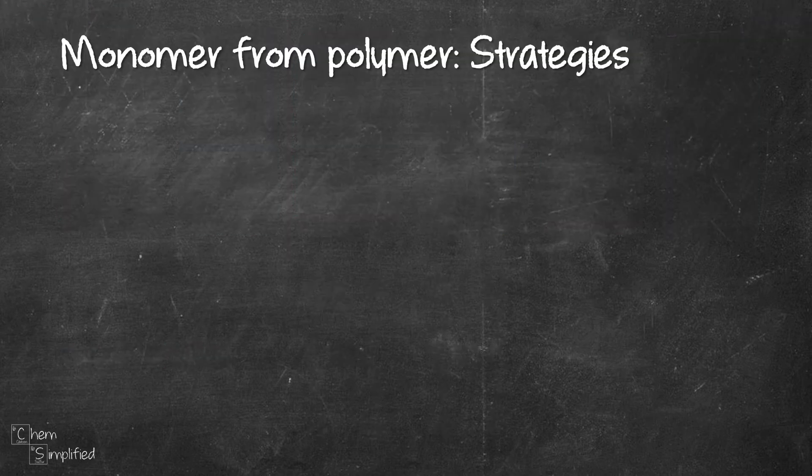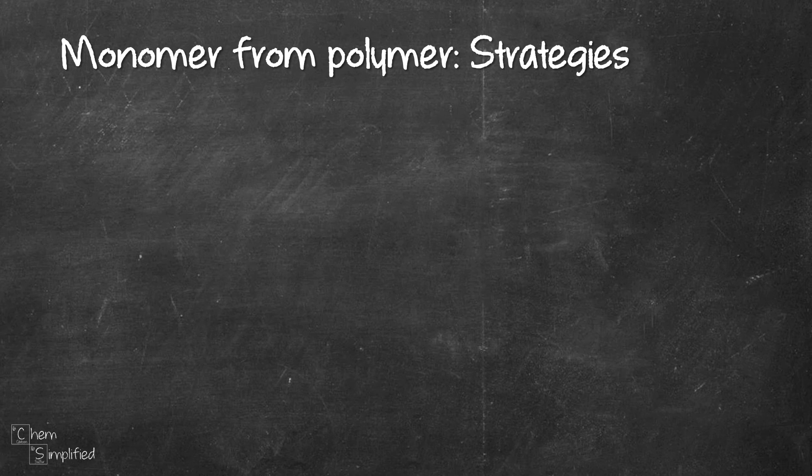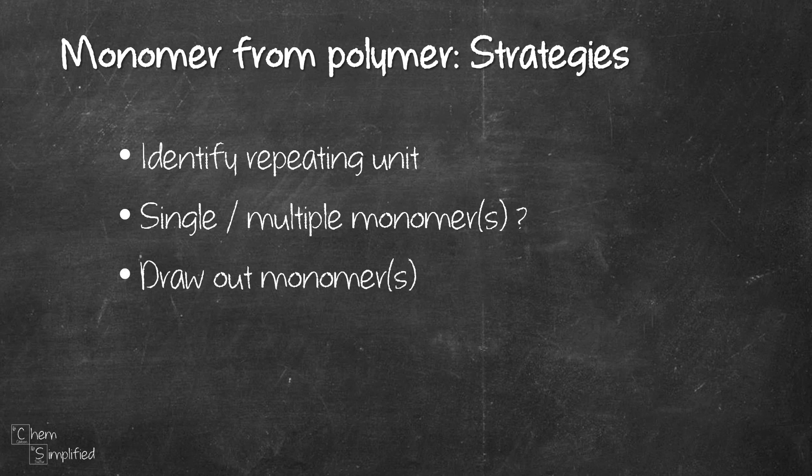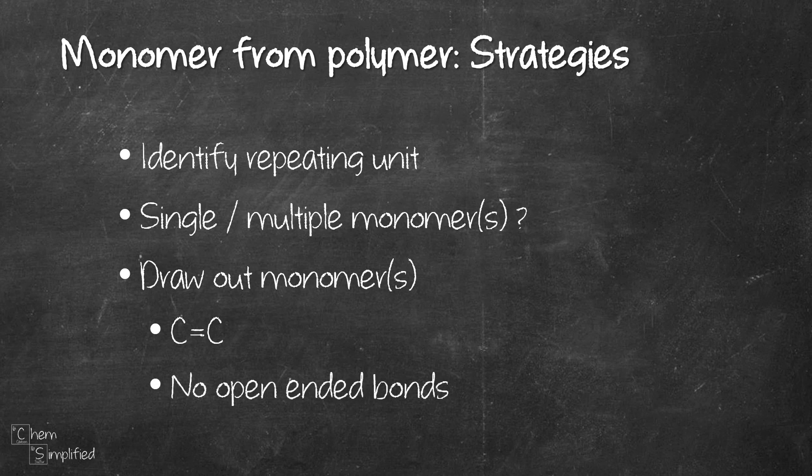From the three examples we worked on, first thing you need to do when trying to find monomer from polymer is to identify the repeating unit. Then we'll need to decide if it's single or multiple monomers involved. Then we draw out the monomers, make sure to add in the CC double bond and make sure that there's no open-ended bonds.